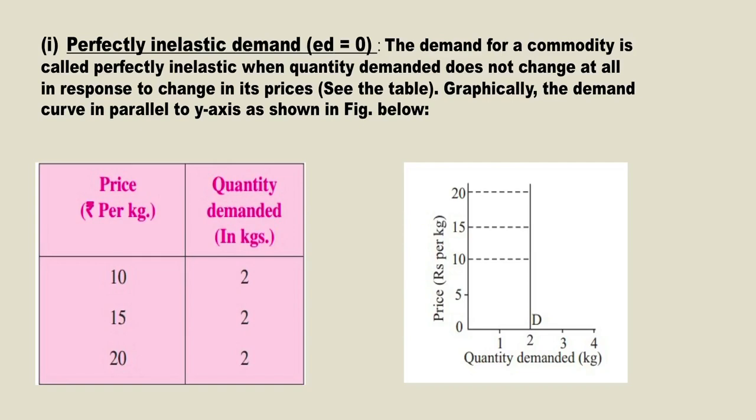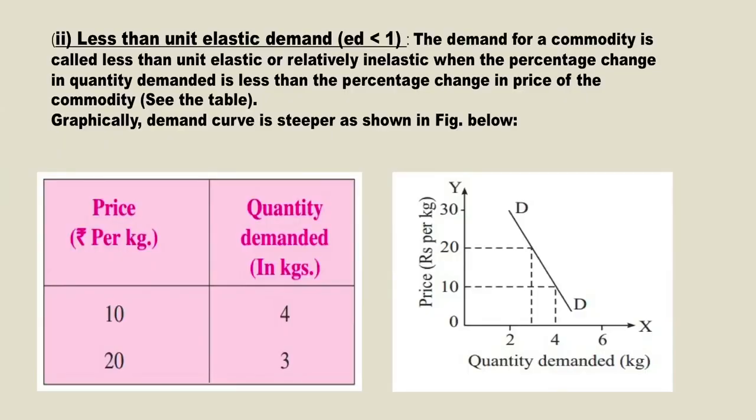The second case is price elasticity of demand less than one. In this case, the quantity demanded increases but less than proportionate to the decrease in price. The table shows price increases from 10 to 20, but the quantity demanded decreases only from 4 to 3.